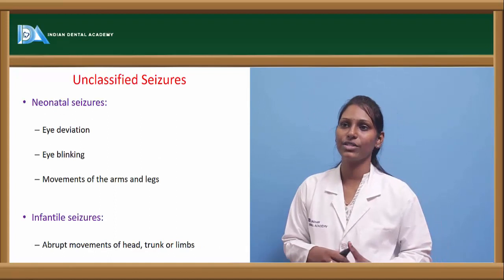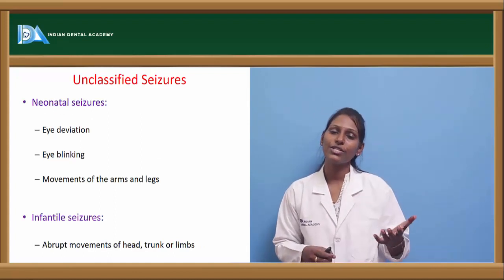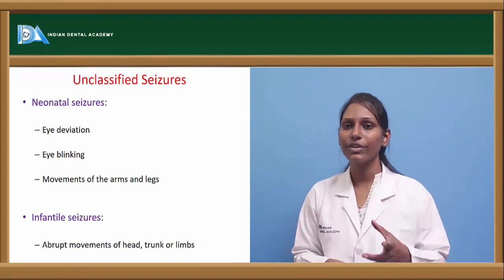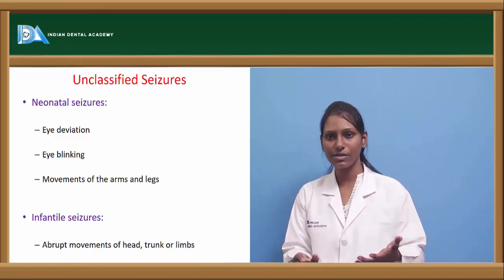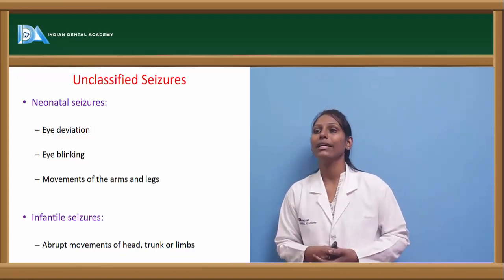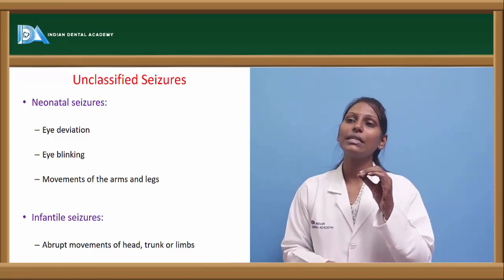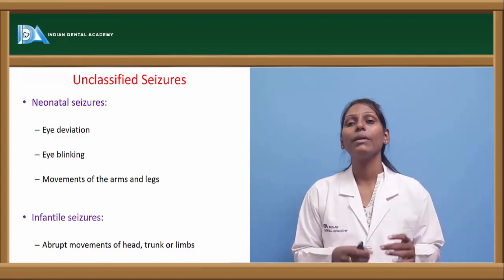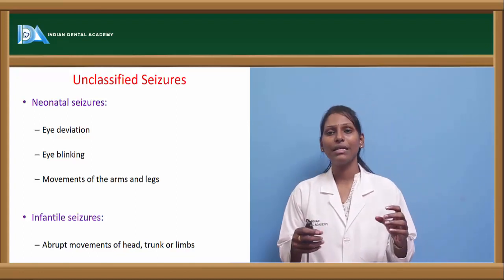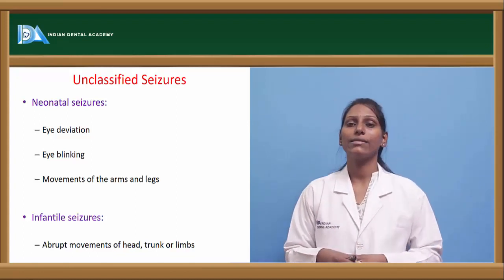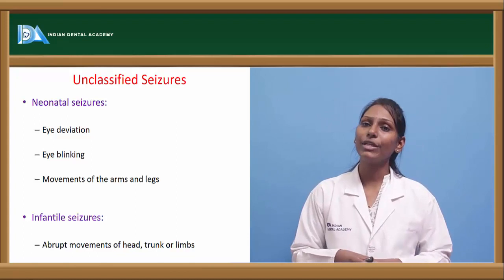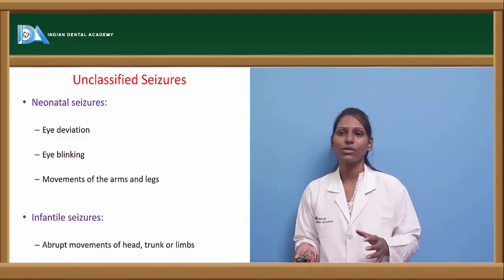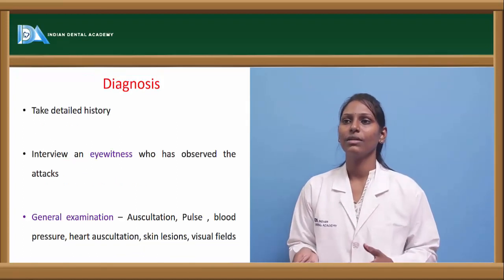Coming to unclassified seizures, there are neonatal seizures and infantile seizures. Neonatal seizures, in newborns, include features such as eye deviation, eye blinking, and movements of arms and legs. Infantile seizures involve abrupt movements of the head, trunk, and limbs.